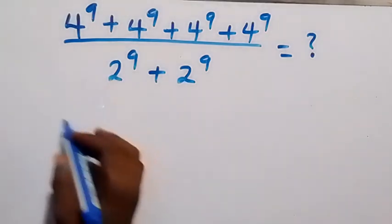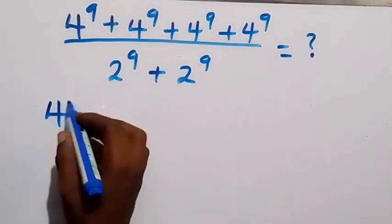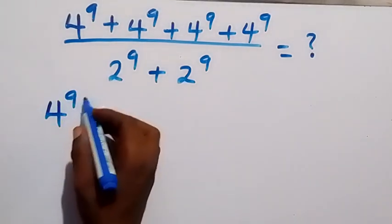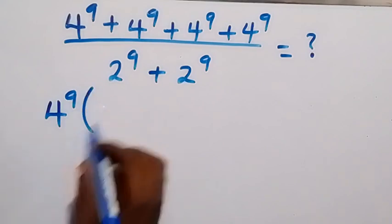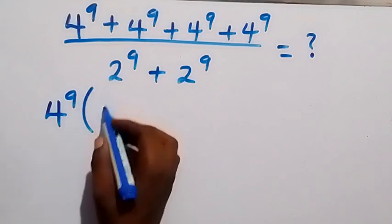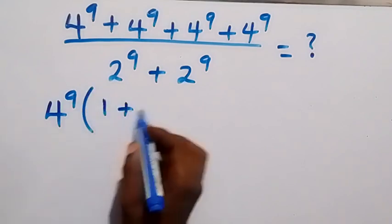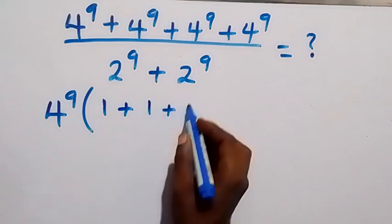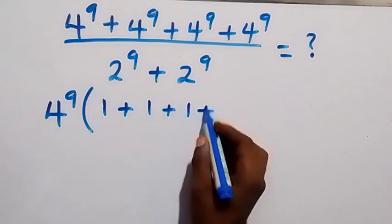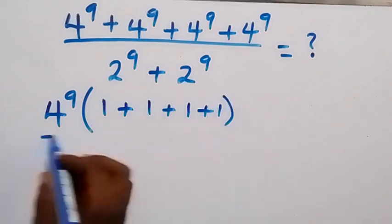From here we can factor 4 raised to power 9 out, and this will be 4 raised to power 9 into brackets — we mean 1 plus 1 plus 1 plus 1.